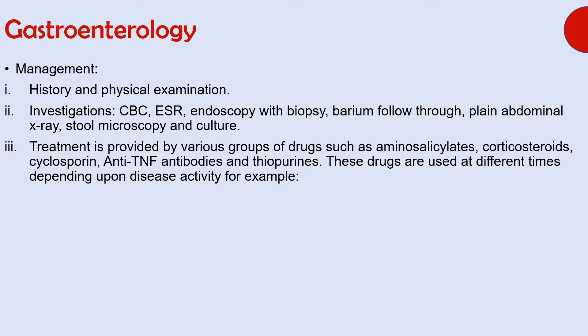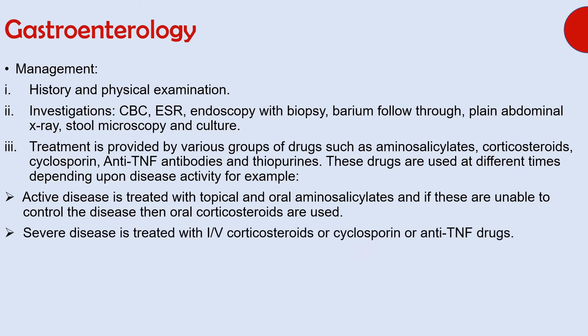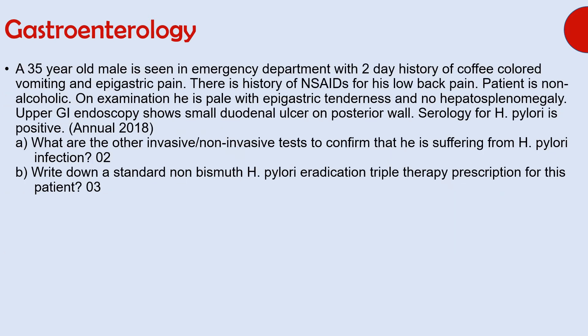Treatment is provided by various groups of drugs such as aminosalicylates (e.g., sulfasalazine and mesalazine), corticosteroids, cyclosporine, anti-TNF antibodies (e.g., infliximab), and thiopurines (e.g., azathioprine). Active disease is treated with topical and oral aminosalicylates, then oral corticosteroids if needed. Severe disease is treated with intravenous corticosteroids or immunosuppressives such as cyclosporine or anti-TNF drugs. If symptoms are still uncontrolled, surgical resection of colon and rectum is performed.